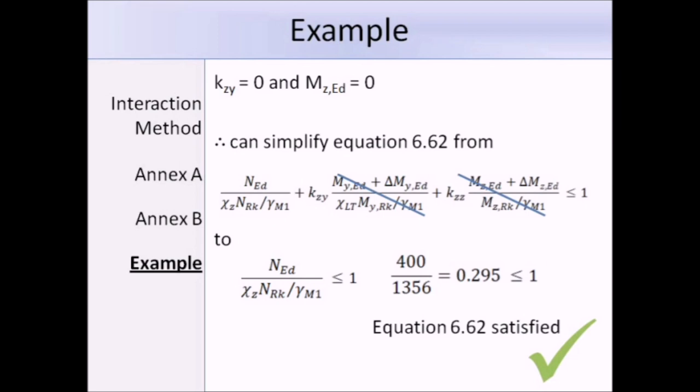Now, we are told in the question that there is zero minor axis moment, meaning MZED equals 0. We know KZY equals 0, so equation 6.62 can be simplified down to NED over the design buckling resistance. That's 400 over 1356 for the z-axis, which works out as 0.295, which is less than 1. So we can safely say that equation 6.62 is satisfied. All we need to do now is to ensure that equation 6.61 is also satisfied.